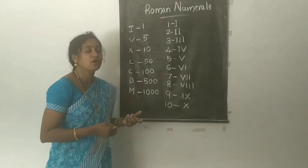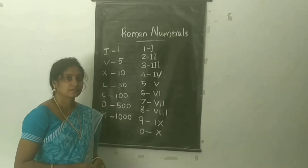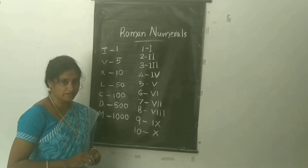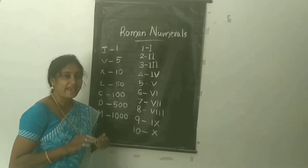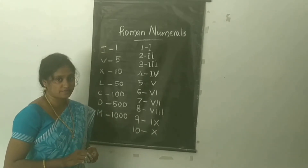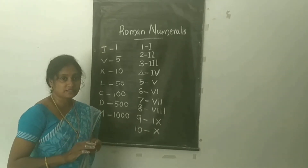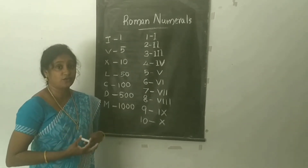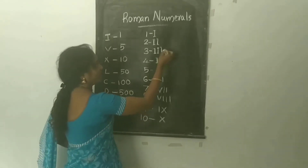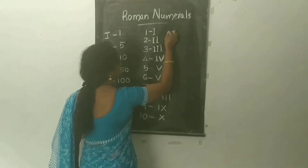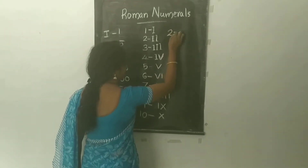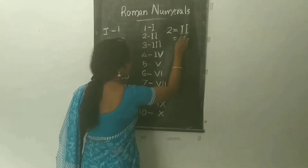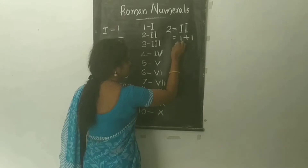There are some rules for writing Roman Numerals. The first rule is: if a symbol is repeated, its value is added as many times as it occurs. For example, 2 can be written as two I's, that is 1 plus 1 equals 2.